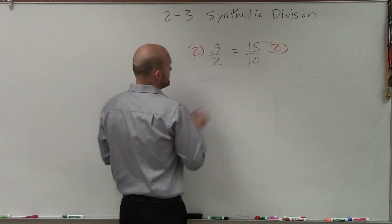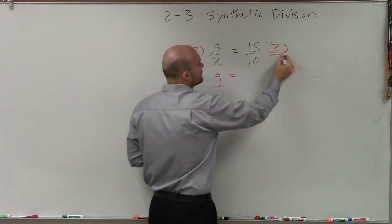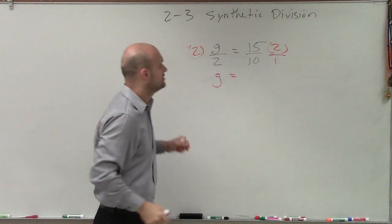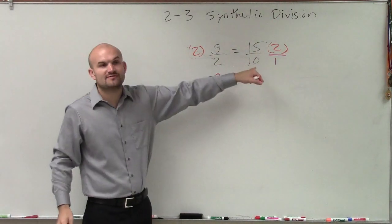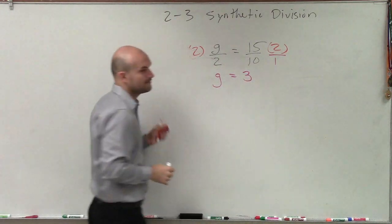So that leaves us with g equals, then we multiply our fractions. Remember, multiplying fractions, we multiply across. So therefore, 15 times 2 is 30. 30 divided by 10 is going to be? Three. Three. All right.